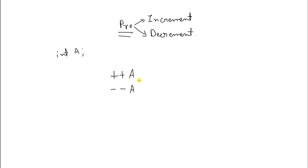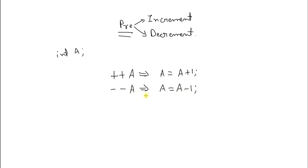So what is the meaning of plus-plus-a and a-plus-plus? Plus-plus-a implies a is equal to a plus 1. So if you are writing plus-plus-a, it is nothing but a equals a plus 1, and if you are writing minus-minus-a, it is nothing but a equals a minus 1. So if you want to increment your variable by 1, instead of writing the full expression you can simply write plus-plus-a.